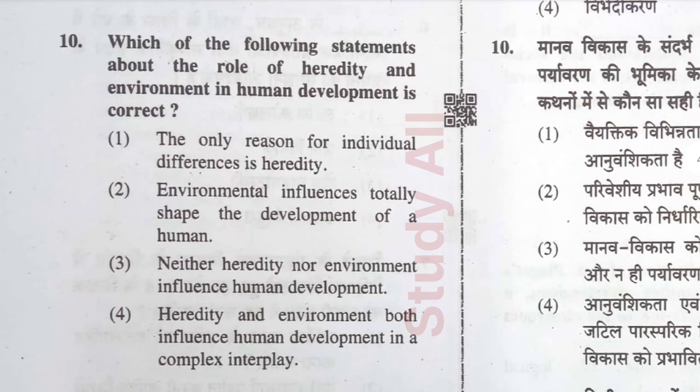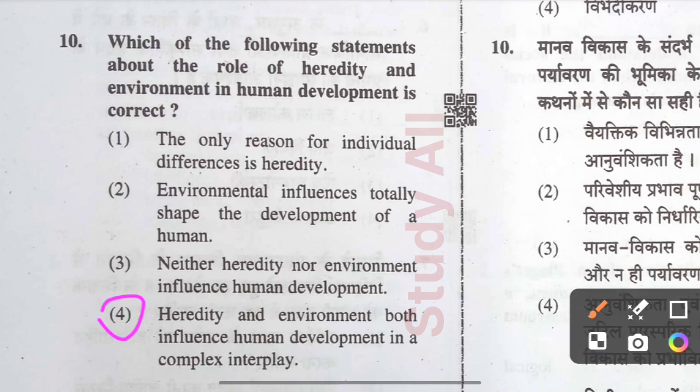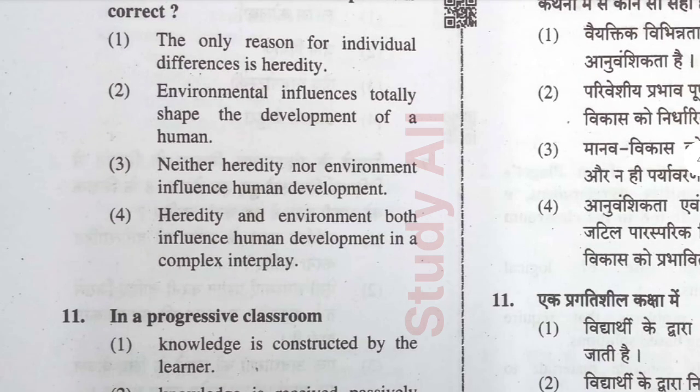Question number ten: Which of the following statements about the role of heredity and environment in human development is correct? The correct option is option D: heredity and environment both influence human development in a complex interplay. This is a very important question that appears in every session of CTET in different forms.